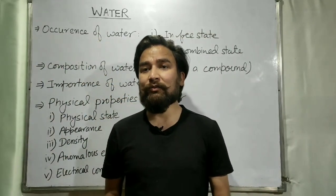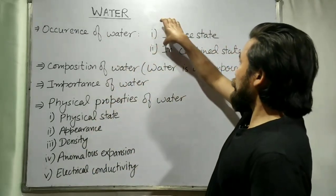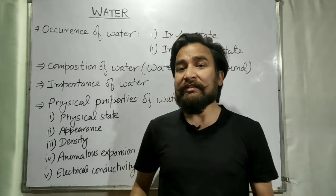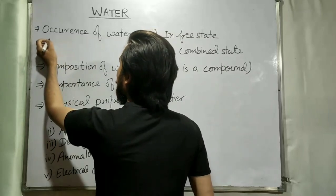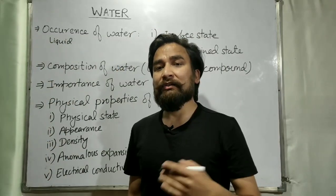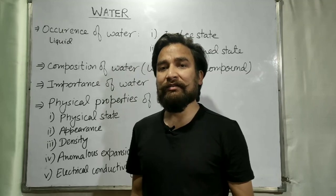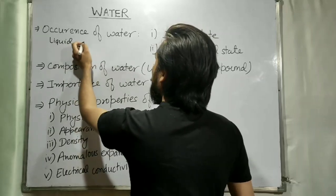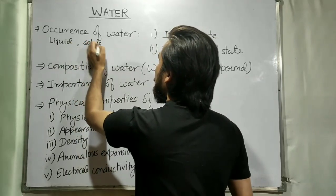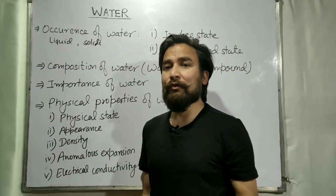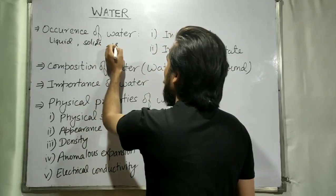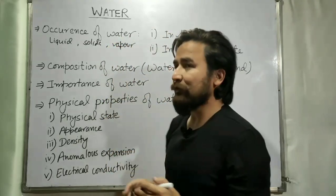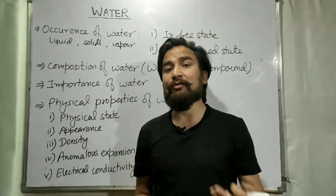In our earth, water occurs in two forms: one is free state and the other is combined state. In free state, water can exist in the form of liquid, like in rivers, seas, ponds, etc. Similarly, in solid state water occurs in the form of ice, snow, frost, etc., and in gaseous state water exists in the form of vapour.